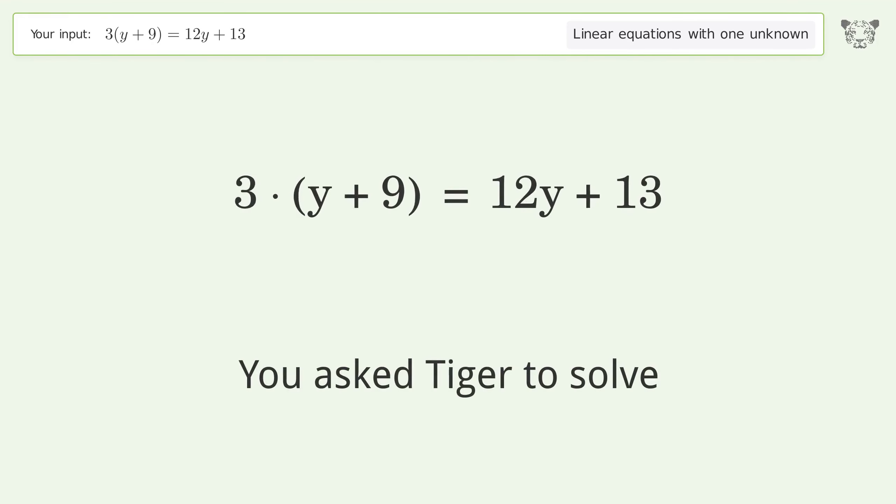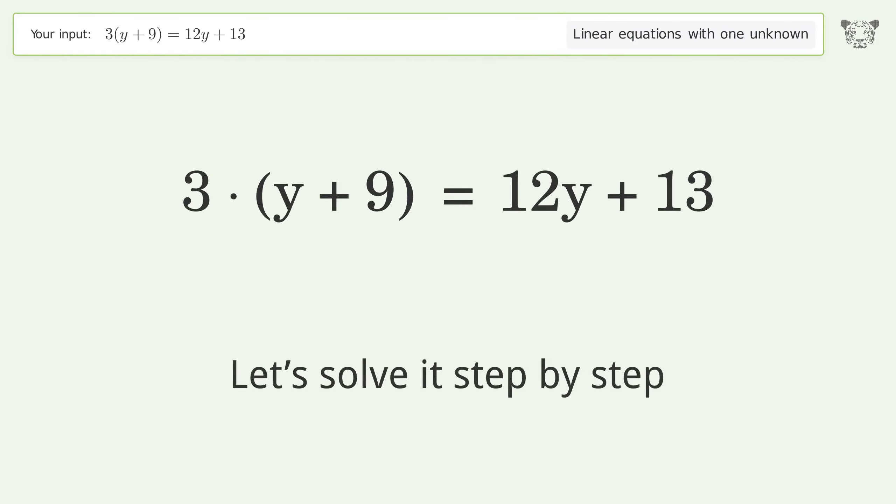You asked Tiger to solve. This deals with linear equations with one unknown. The final result is y equals 14 over 9. Let's solve it step by step.